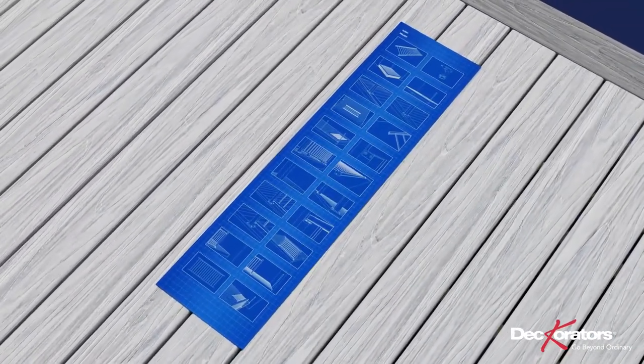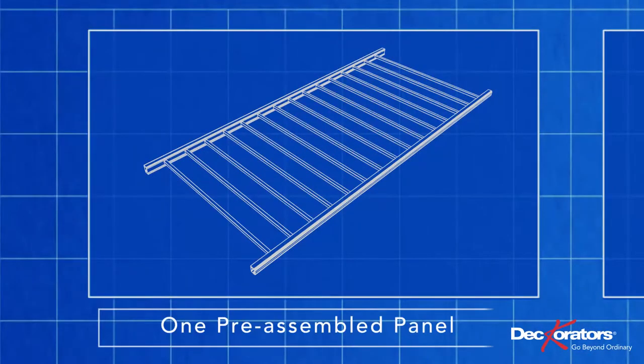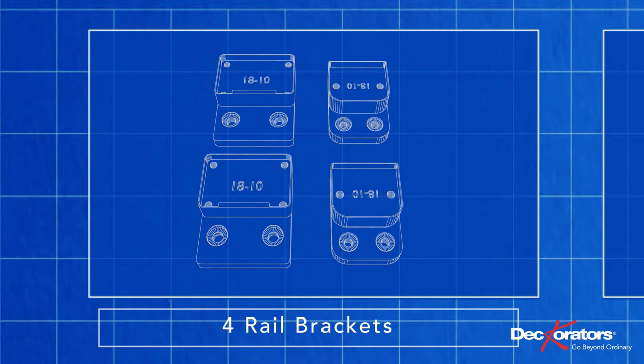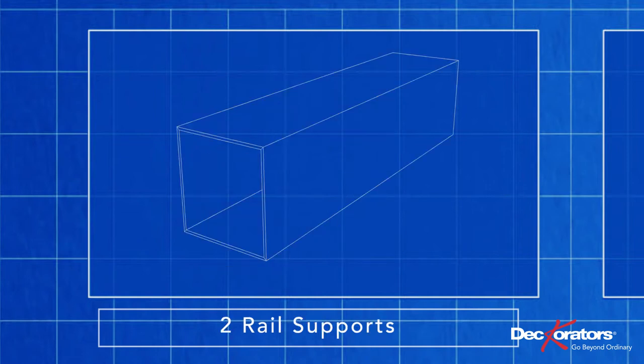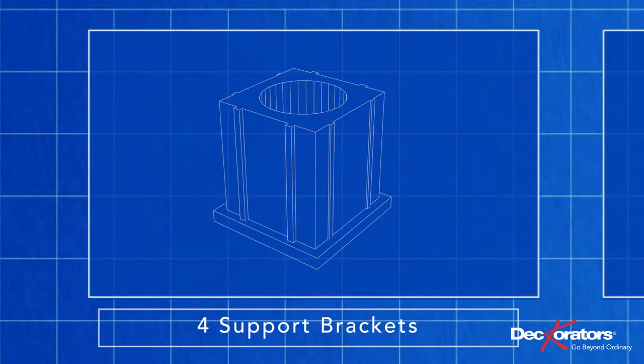Your ALX Contemporary Railing System comes with one pre-assembled panel, four rail brackets, two rail supports, four support brackets, and mounting hardware.